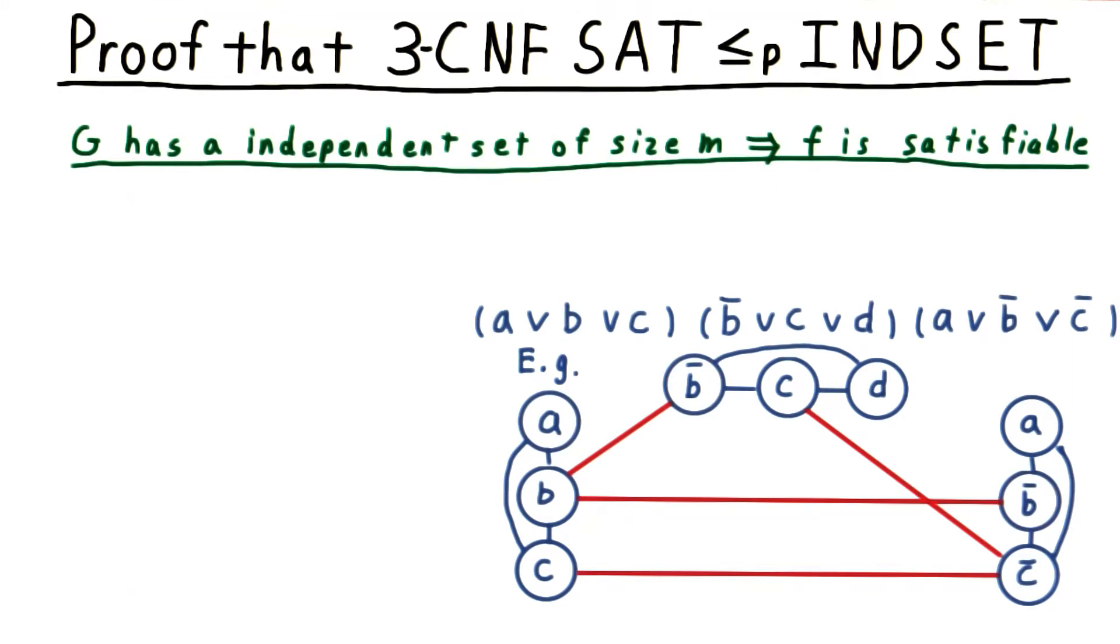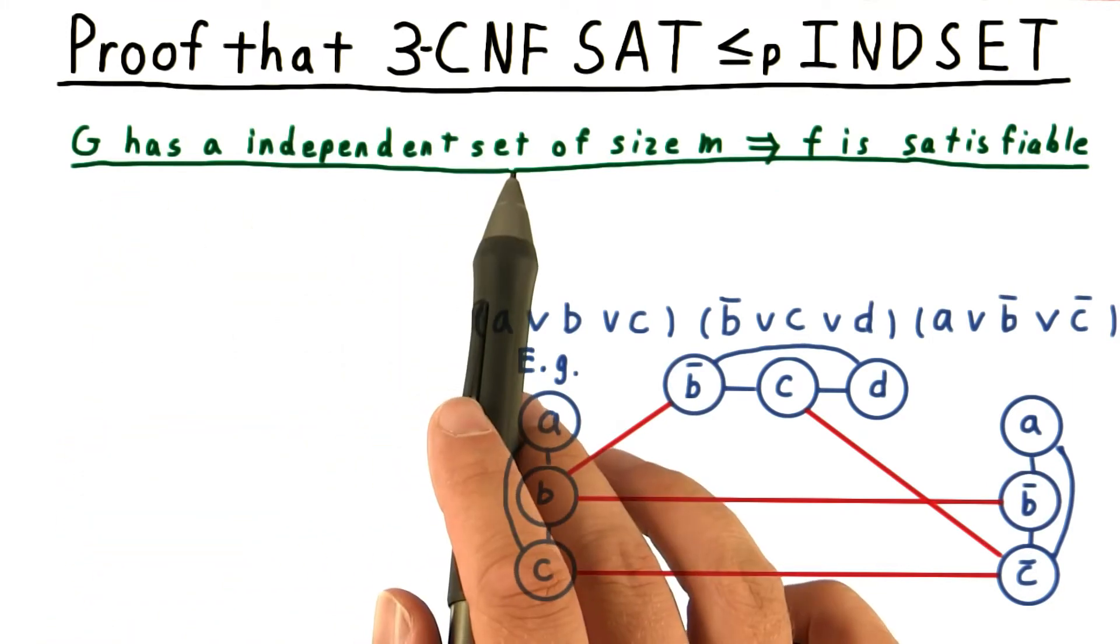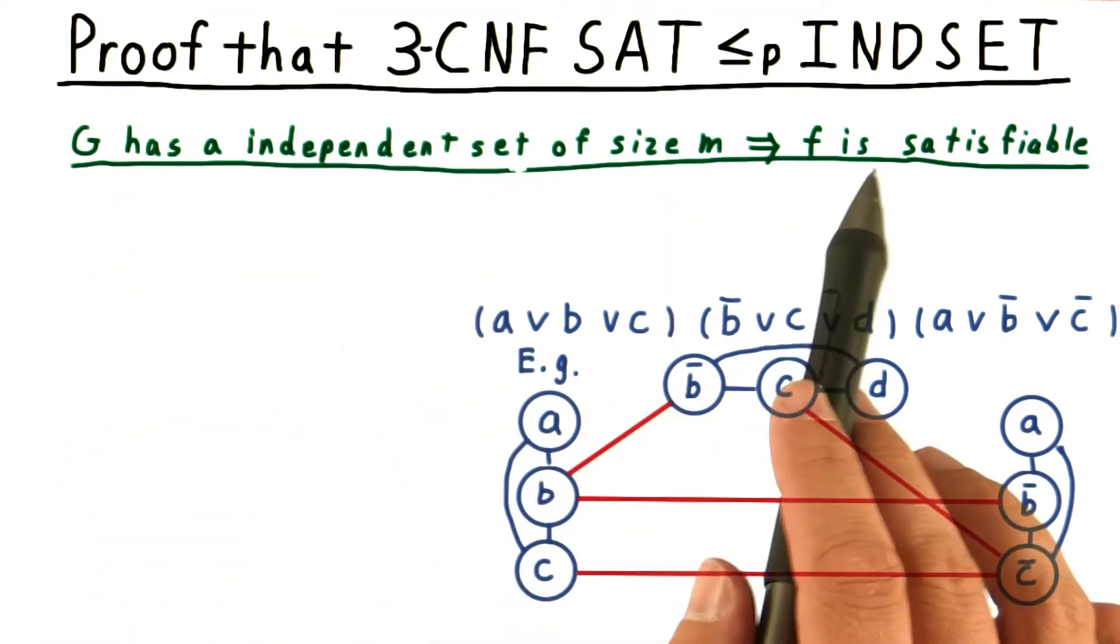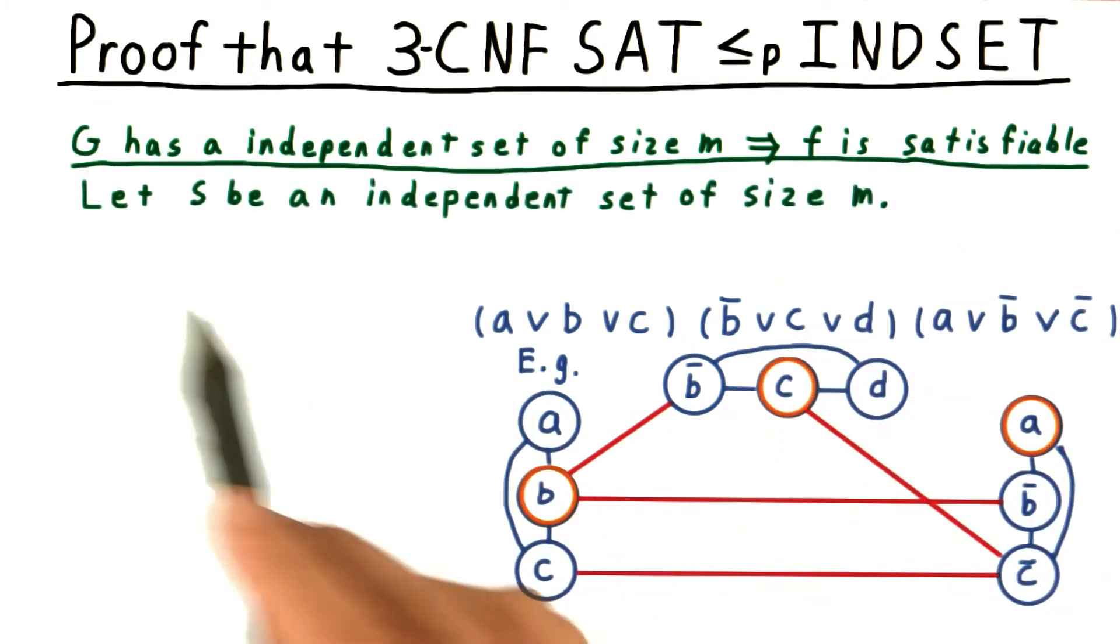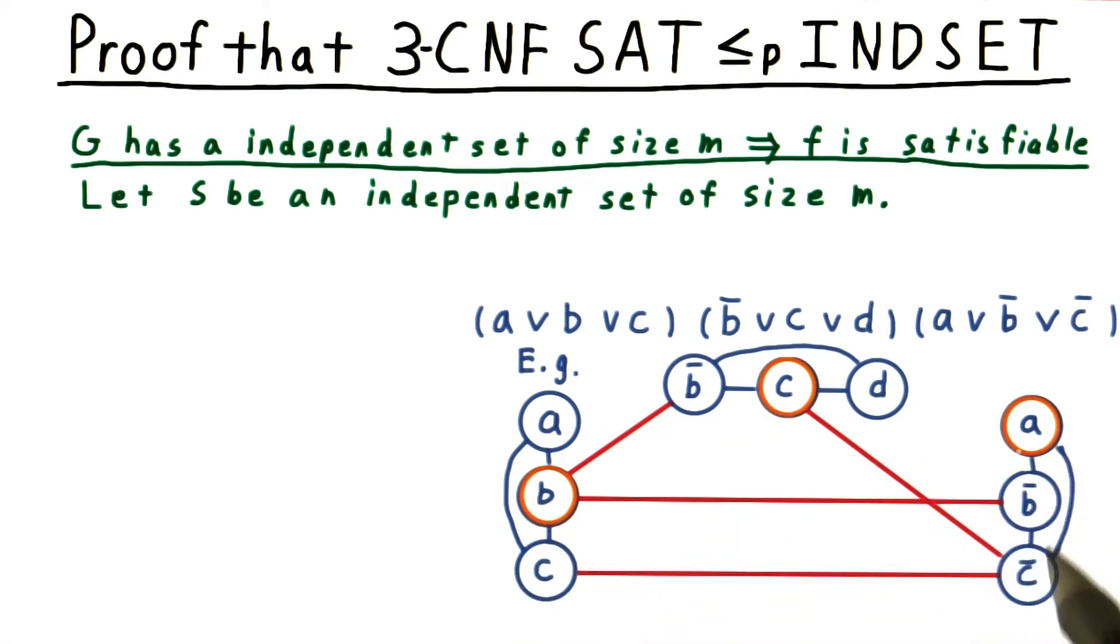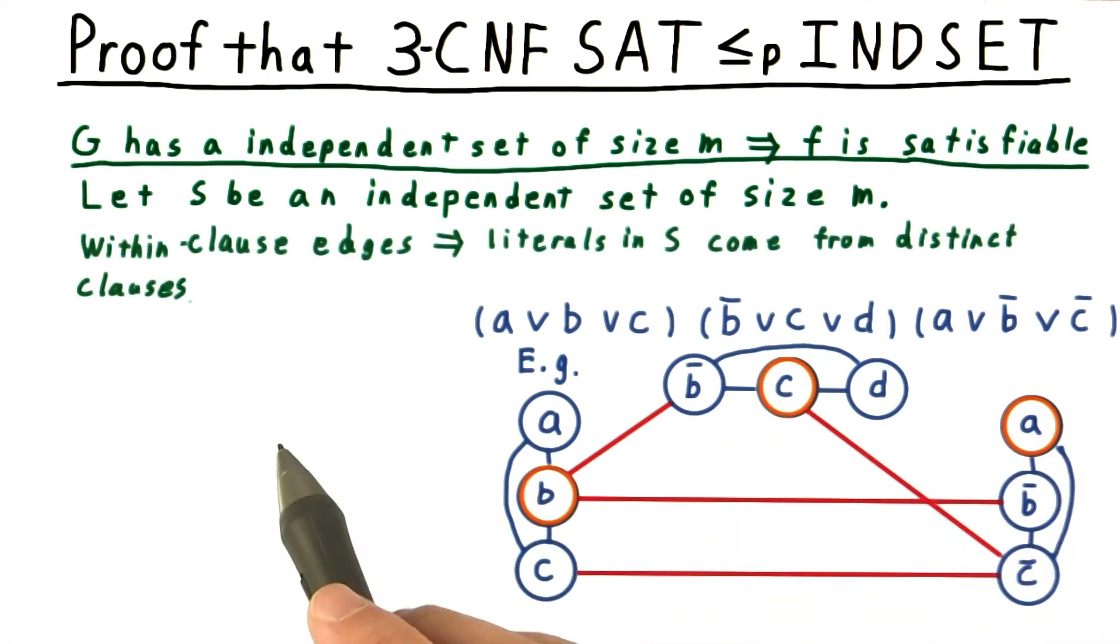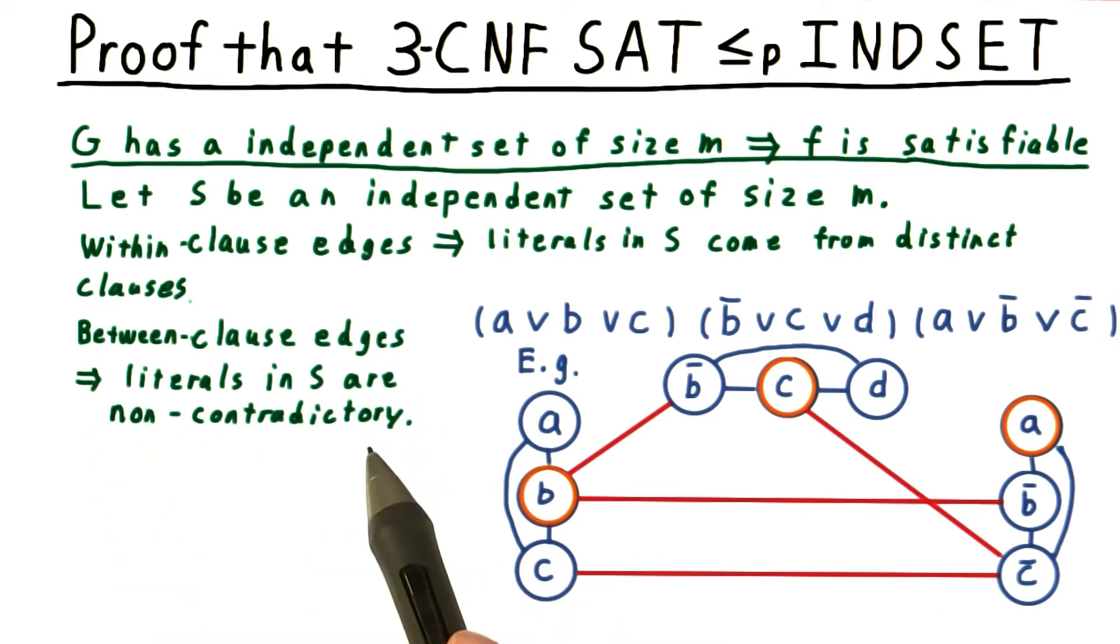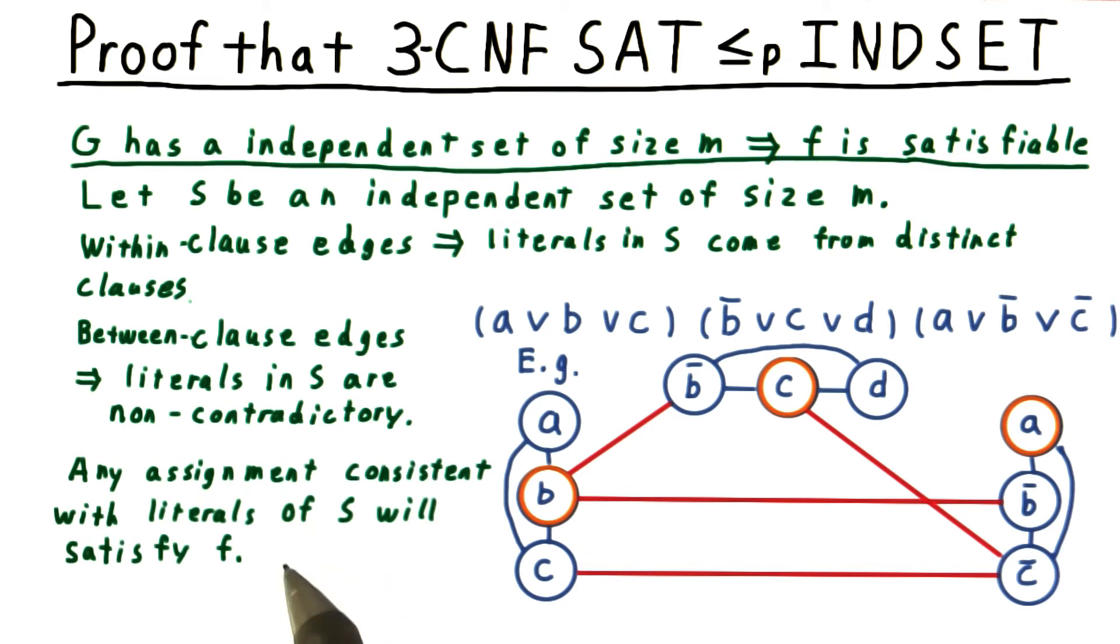Let's prove the other direction next. If G has an independent set of size M, then the formula F is satisfiable. We start with an independent set of size M in the graph. Here I've marked an independent set in our example graph. The fact that there can be no within-clause edges in S implies that the literals in S come from distinct clauses. And the fact that there are no between-clause edges implies that the literals in S are non-contradictory. Therefore, any assignment consistent with the literals of S will satisfy the original formula F.